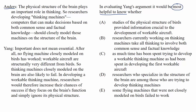Anders: the physical structure of the brain plays an important role in thinking. So researchers developing thinking machines — computers that can make decisions based on both common sense and factual knowledge — should closely model those machines on the structure of the brain. Yang responds: important does not mean essential. After all, no flying machine closely modeled on birds has worked. Workable aircraft are structurally very different from birds. So thinking machines closely modeled on the brain are also likely to fail. In developing a workable thinking machine, researchers would therefore increase their chances of success if they focus on the brain's function and simply ignore its physical structure.